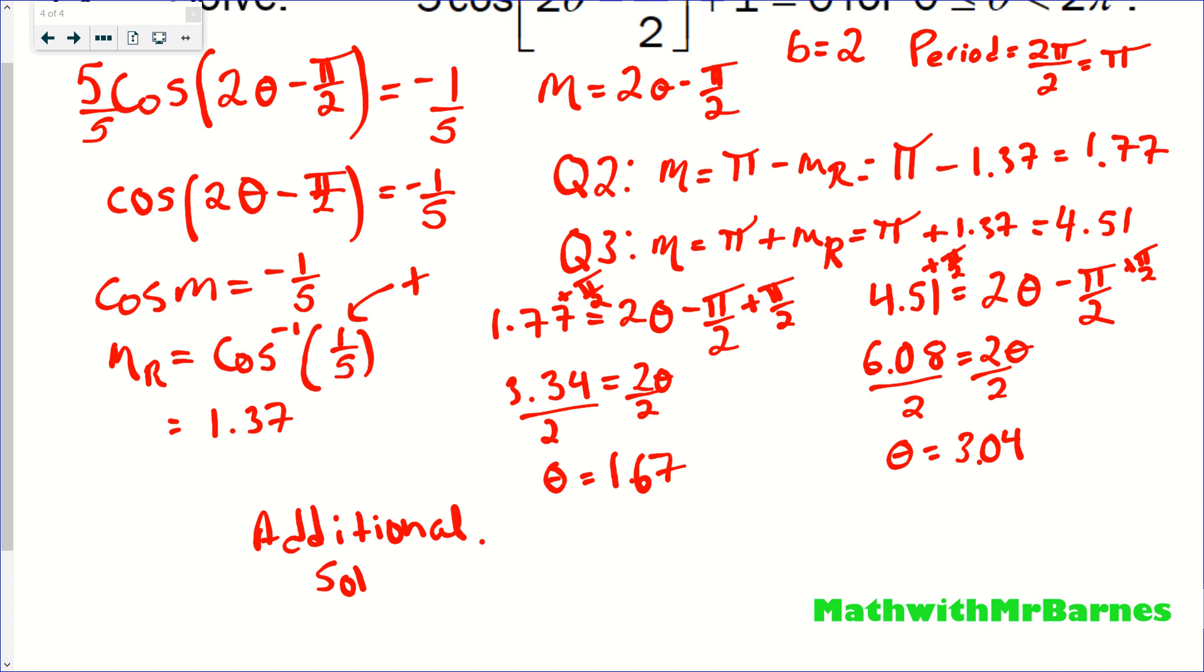So if I want to find the additional solutions, what I have to do is add and subtract periods and see if it's within this 0 to 6.28. Obviously if I subtract off pi from both of these, it's going to be below 0. So that's no good. So my additional solution is just going to come from adding pi to both of these. So I'll add the pi button to my calculator. So 1.67 plus pi, and that's 4.81. And that's below my 6.28. But if I added it again, I get 7.95. So that's not going to help me. So this guy right here, 3.04, I'm going to add pi. 3.04 plus pi, 6.18. And that's below my 6.28 cutoff, just below. So obviously if I added another pi I would bust that. So that gives us four solutions to this equation.